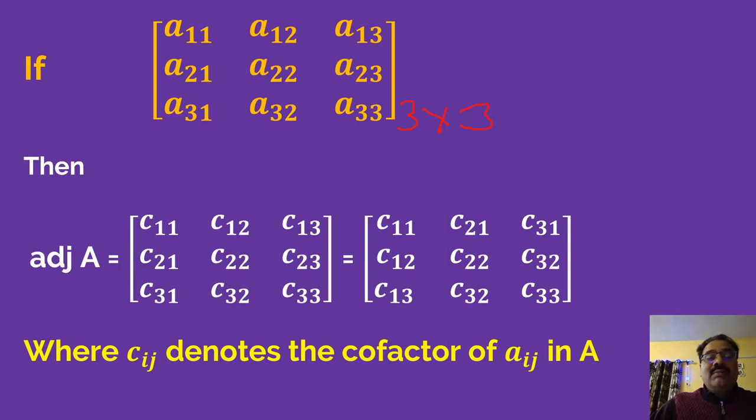Let us suppose you want to find out the cofactor of A11. This position means 1 plus 1 is a positive position. Minus 1 to the power 1 plus 1 is positive. Then you can write this submatrix: A22, A23, A32, and A33. You can multiply this diagonal, A22 into A33 minus A32 and A23, to find the cofactor of A11.